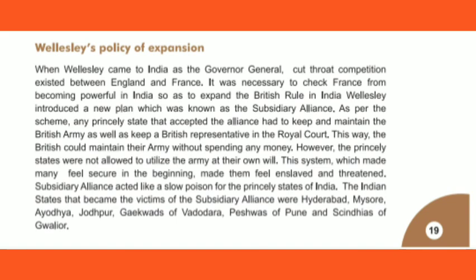It was necessary to stop France from becoming powerful in India. So the British devised a new plan called the Subsidiary Alliance. Under this scheme, any state that entered the alliance would be required to maintain one army — made up of British soldiers — but the state would pay the full salary and maintenance costs of that army. The British would effectively have their own army at no expense to themselves.